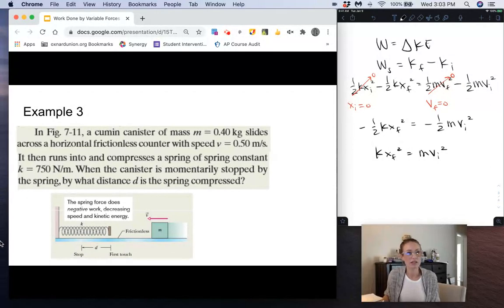Since we're solving for what distance d is the spring compressed, we're really solving for x final there. So I'm going to solve this equation for x final. We get x final is equal to mv initial squared divided by k, and then take the square root of that whole thing because it's x final squared.